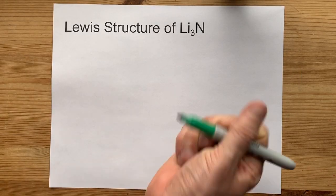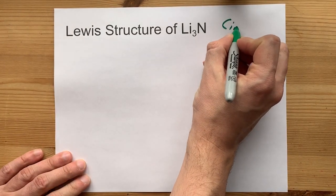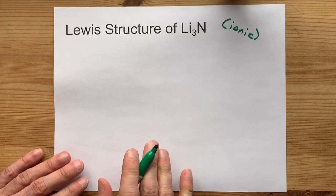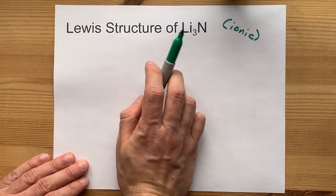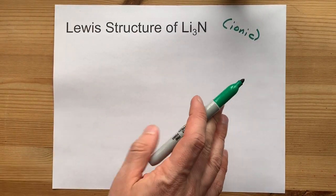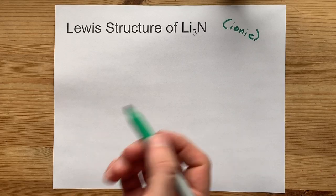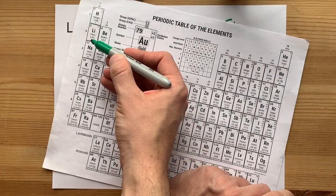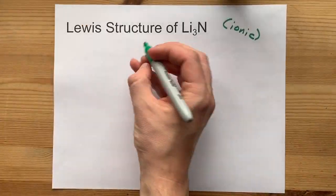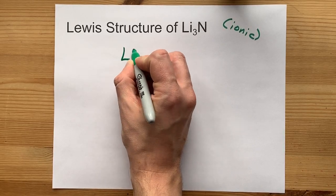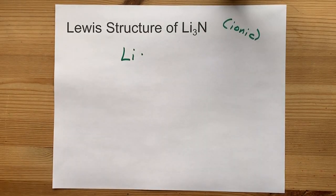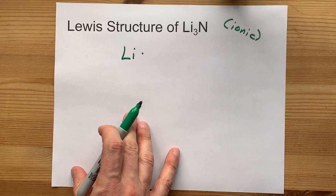When metals and non-metals combine, they form ionic compounds. That means the metals are going to give their electrons away to the non-metal. Lithium in group one brings one valence electron with it. The one outer shell electron.